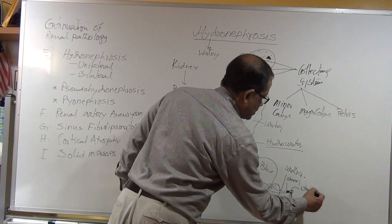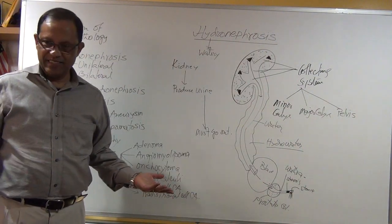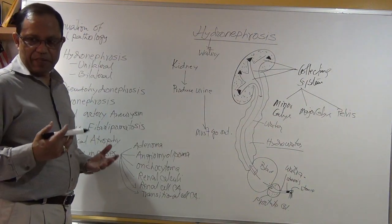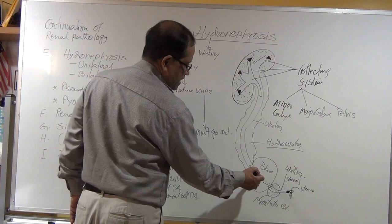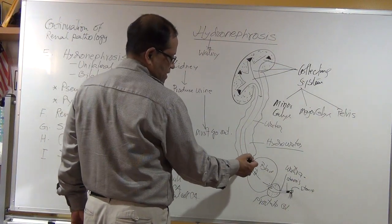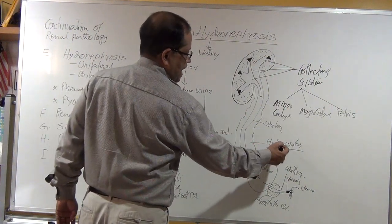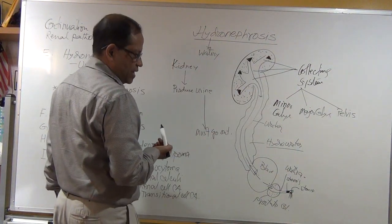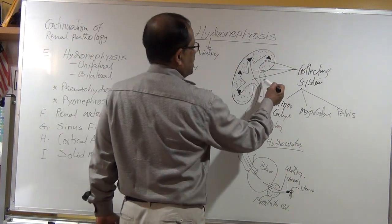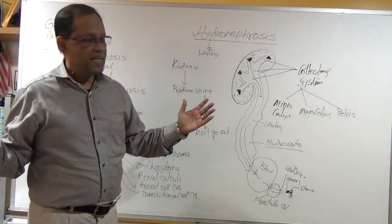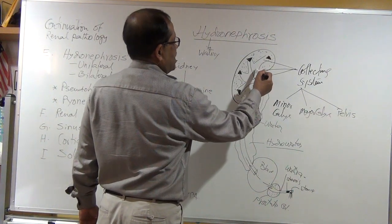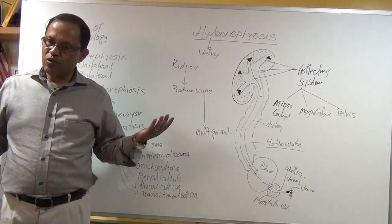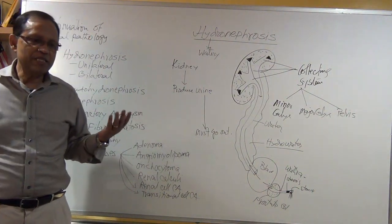When there is stenosis or a stone causing failure to pass urine, reflux occurs. The bladder fills beyond capacity and sends urine back into the ureter, which becomes dilated — hydroureter. Then the ureter sends it back to the pelvis, which gets dilated. When pressure is too much, the major and minor calyces all dilate. Since it is urine, the background is sonolucent — anechoic, dark.